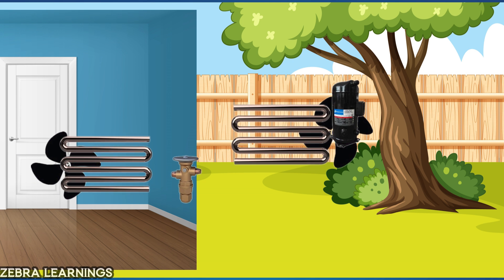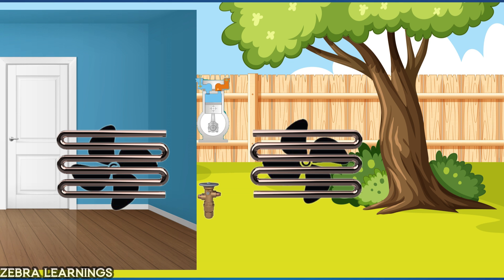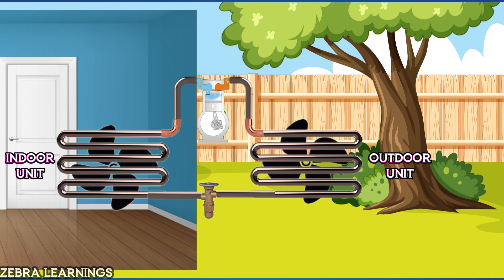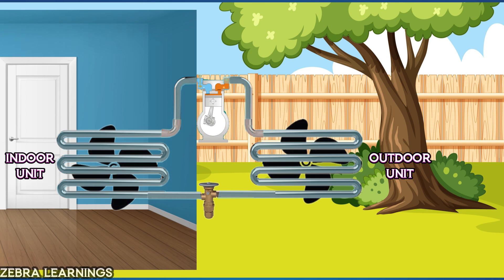Let's place each of these equipments separately. All the equipment are connected by a copper coil. There is a refrigerant inside the copper coil. The compressor pumps the refrigerant and makes it flow through the coil.